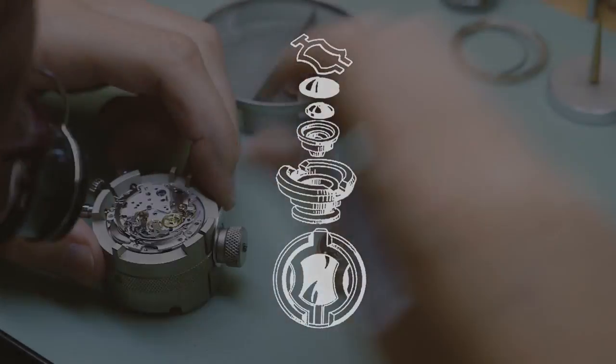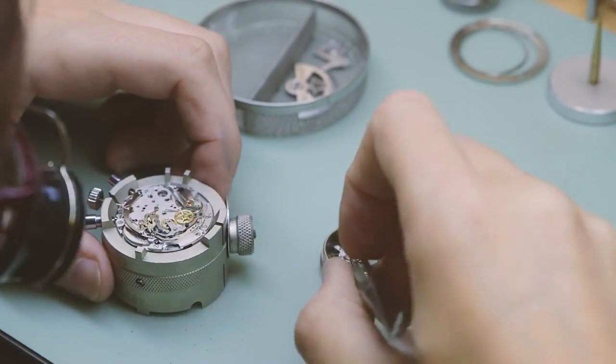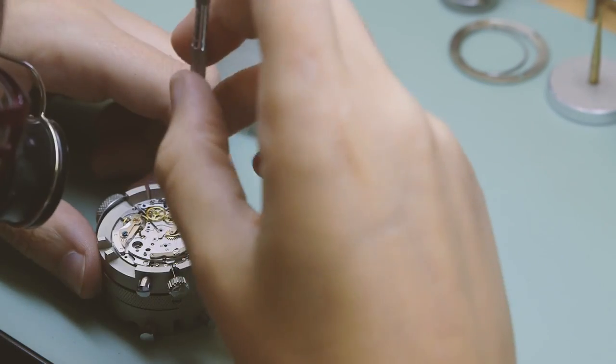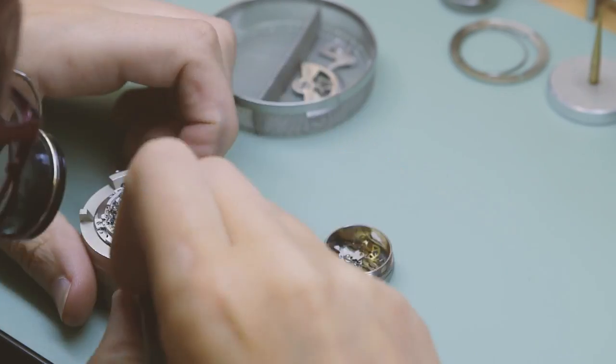When the impact is over the springs guide the parts back to their original positions and the staff itself does not move relative to the jewel bearing.